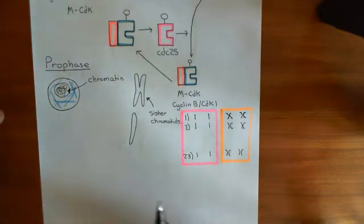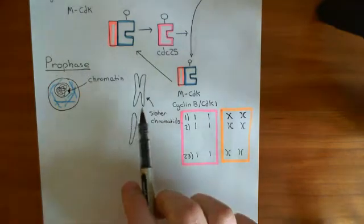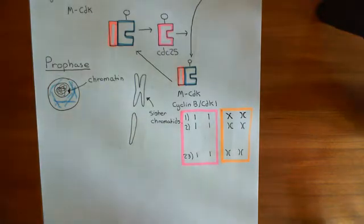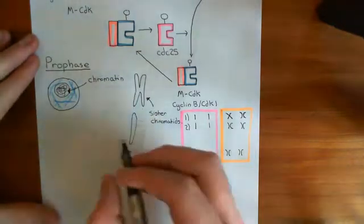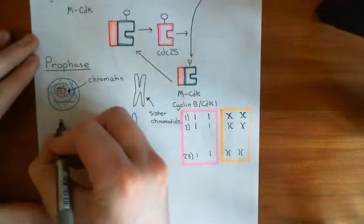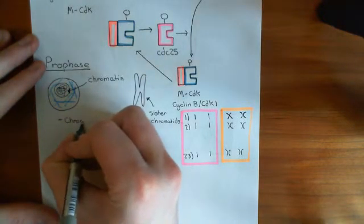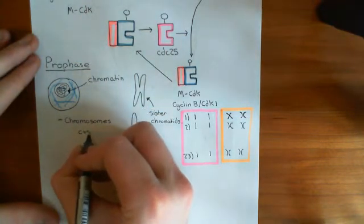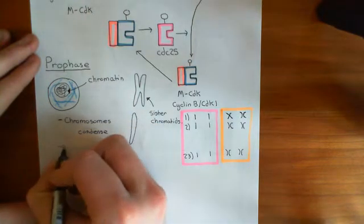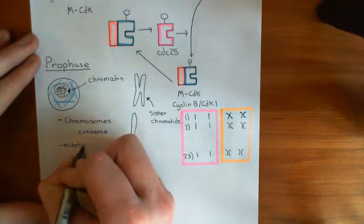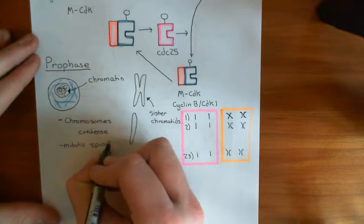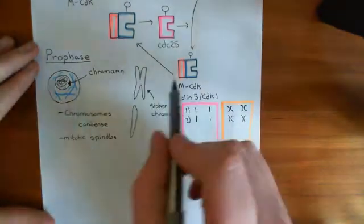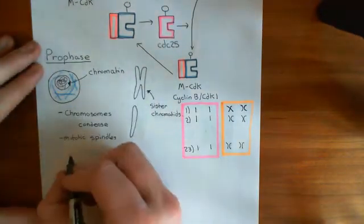So what's going to happen is this chromatin is going to start condensing, and you're going to get 46 sister chromatids — 23 pairs of homologous sister chromatids. Also in prophase, you're going to get the mitotic spindles forming. So the chromosomes condensing is one of the major things that happens in prophase, and the mitotic spindles forming is the second major thing. Both of these processes are driven by MCDK — by the cyclin B CDK1 complexes.